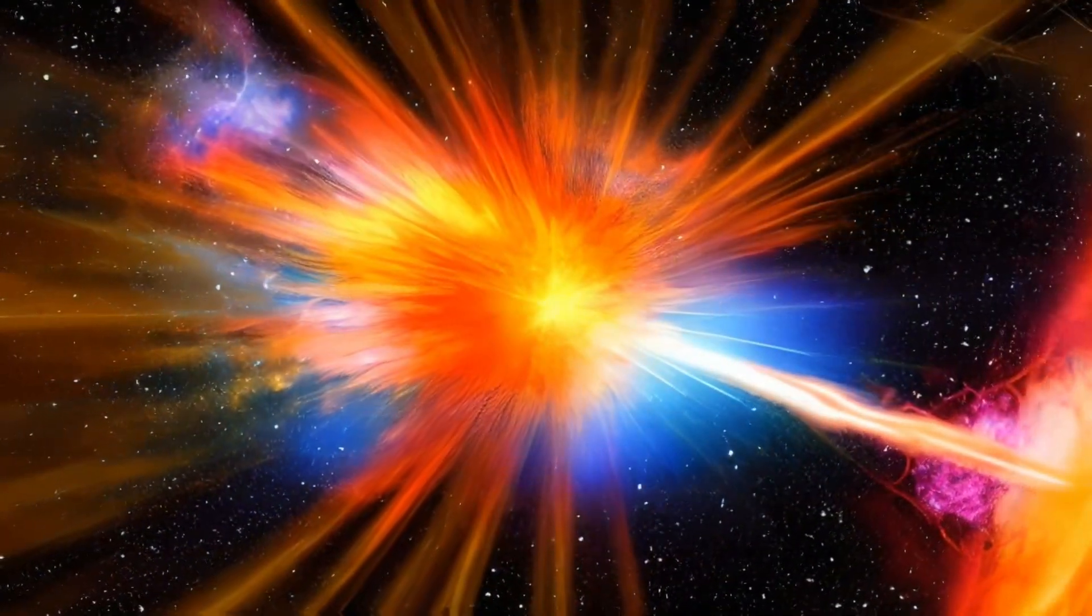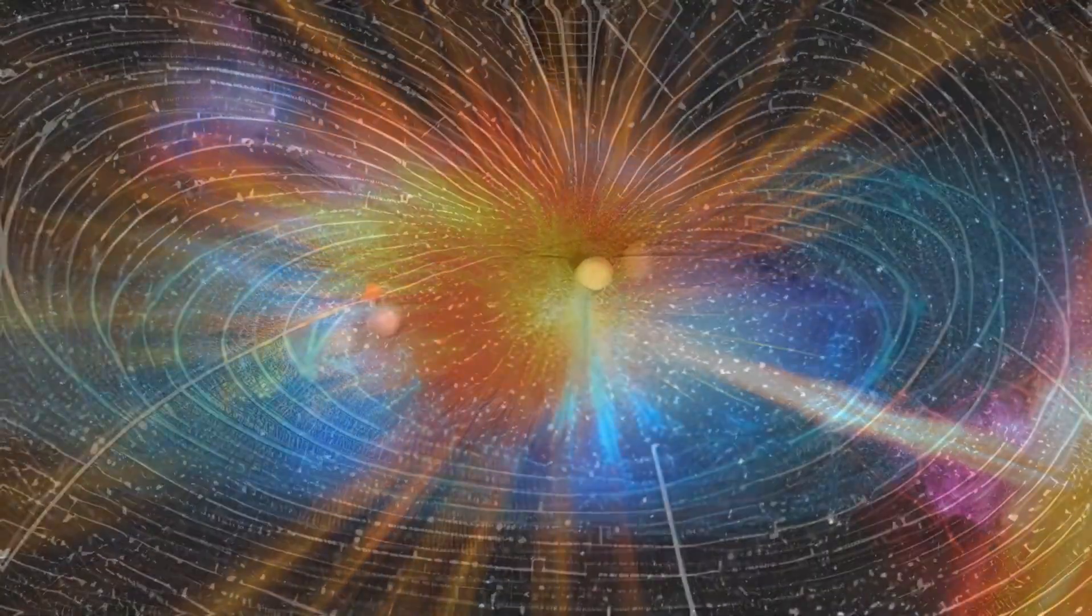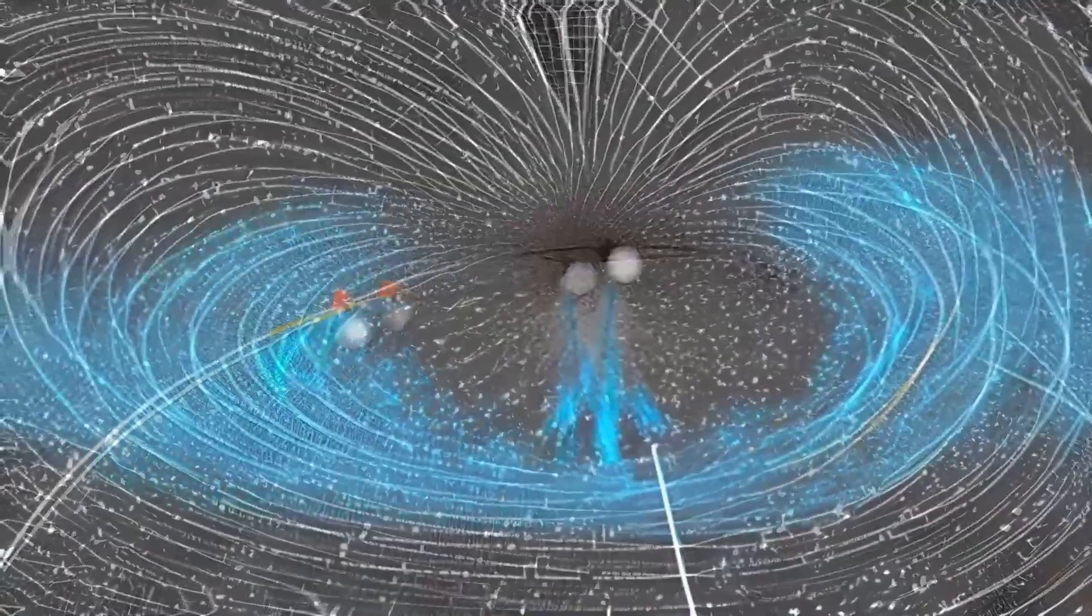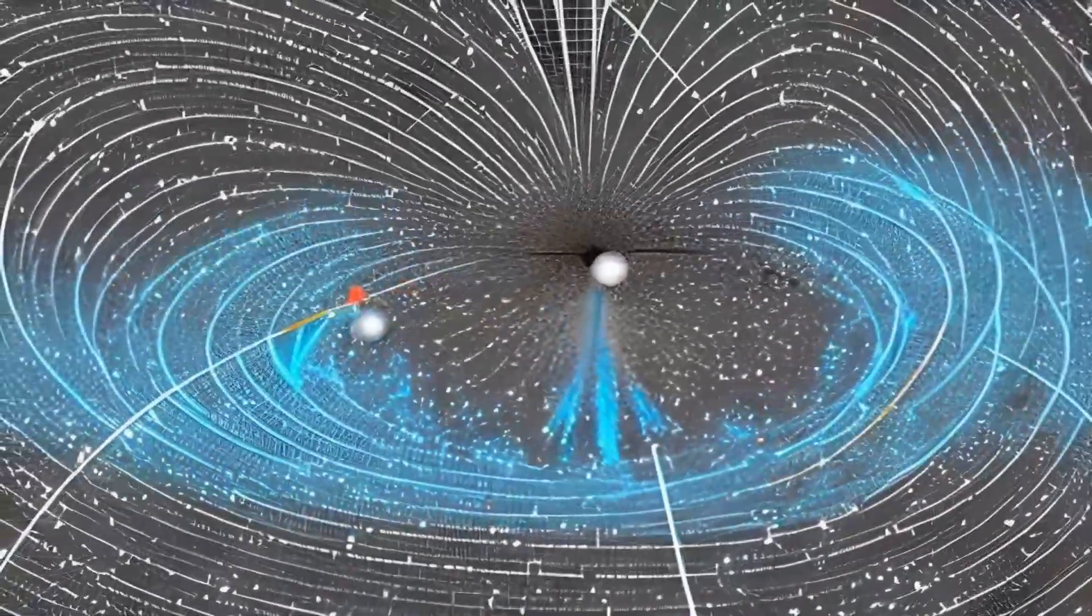As the pressure inside the core increases, atomic electrons are forced into protons and converted into neutrons, which results in a massive stream of neutrinos and gravitational waves.